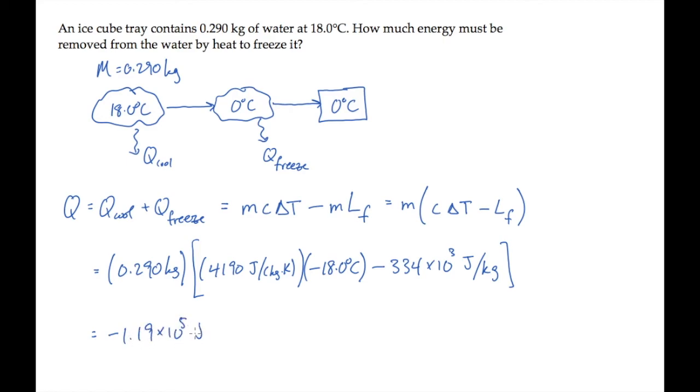And this works out to negative 1.19 times 10 to the fifth joules. The negative sign tells you that amount of energy is removed by heat from the system.